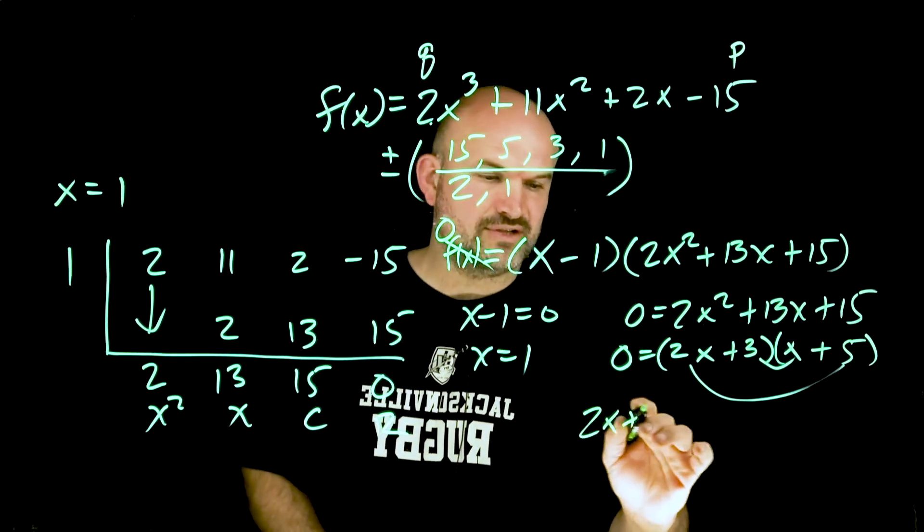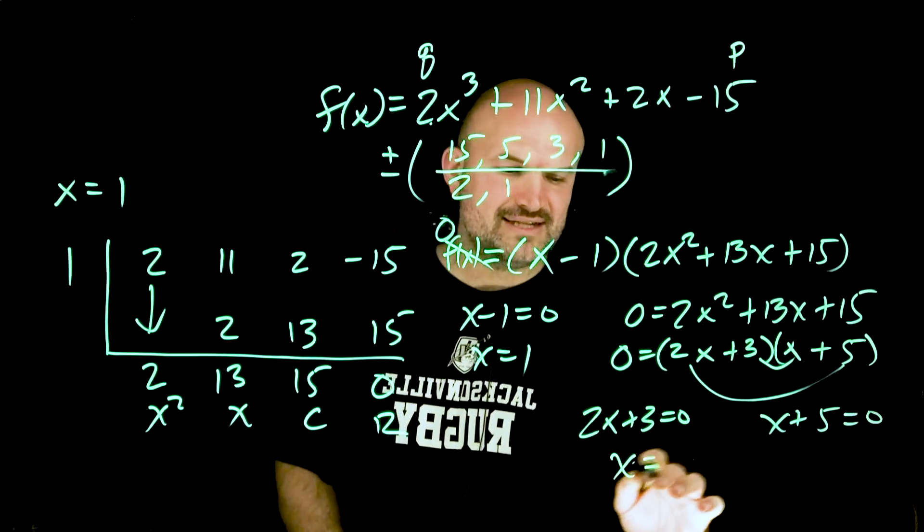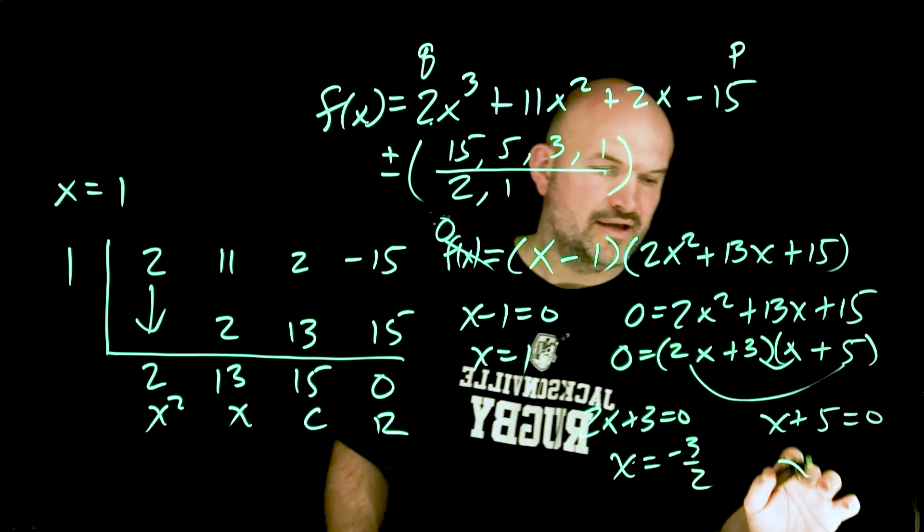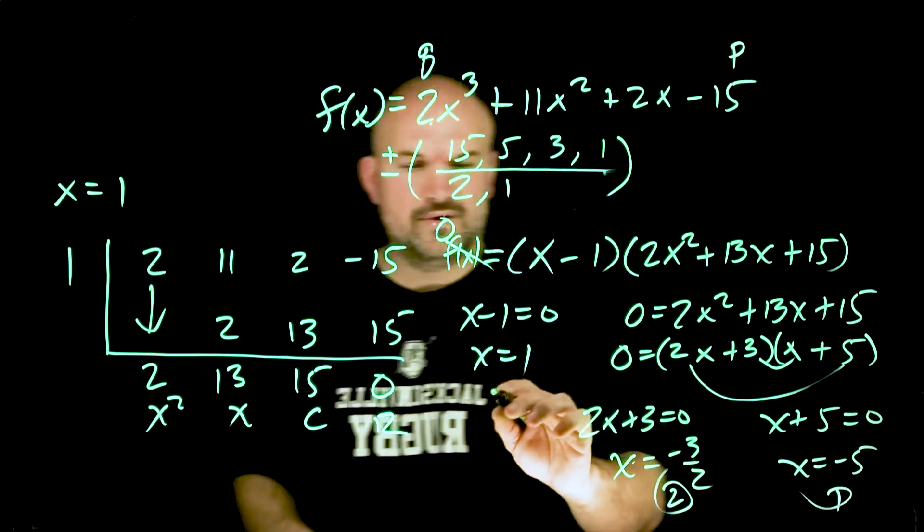Now I can apply the zero product property again. 2x plus 3 equals 0 and x plus 5 equals 0. Therefore x equals negative 3 halves and x equals negative 5. So I have three zeros: 1, negative 3 halves, and negative 5.